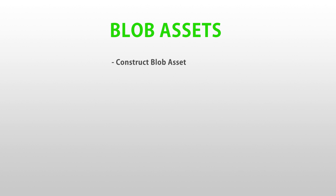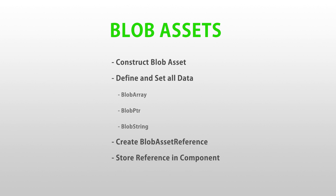The way you create and use blob assets is: first you construct a blob asset, normally during the game object conversion system. You define all of the data that will go inside the blob asset and set it. When defining the data, you define the struct that holds your data. Then you have several containers: the blob array, which holds several instances of your data; the blob pointer, which is a simple pointer to a single instance; and the blob string, which holds a simple string. With the blob asset constructed, you then have the blob asset reference, which is how you store the reference to your blob asset inside an entity component. Then you can access that blob asset from anywhere, like inside a job, read that data, and do whatever you want.